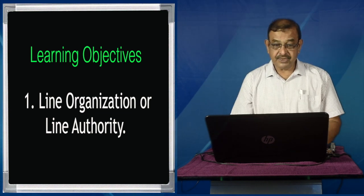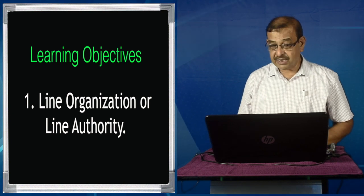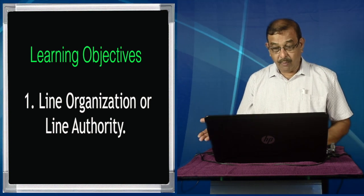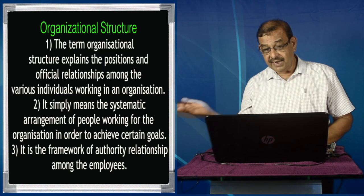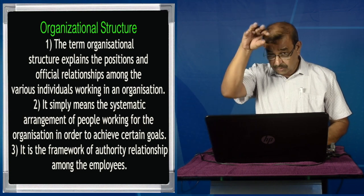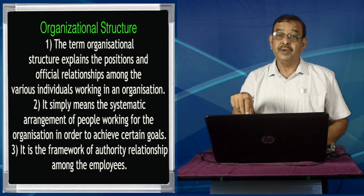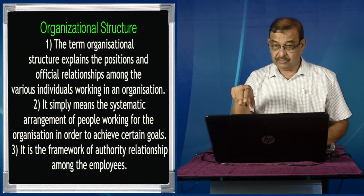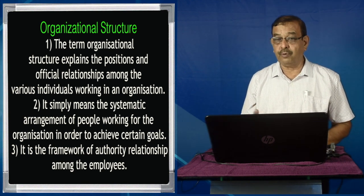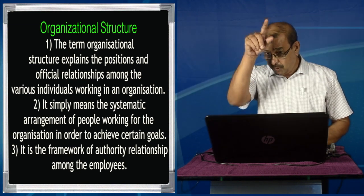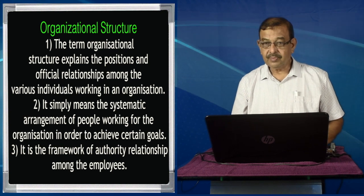The first type is line organization or line authority. In this type of structure, a senior delegates authority, power, orders, and instructions to his subordinate, who in turn delegates it further. Delegation goes from top to bottom — the chief general manager delegates to the general manager, who delegates to the deputy general manager, who delegates to the chief manager, and so on — forming a chain of command from top to bottom.